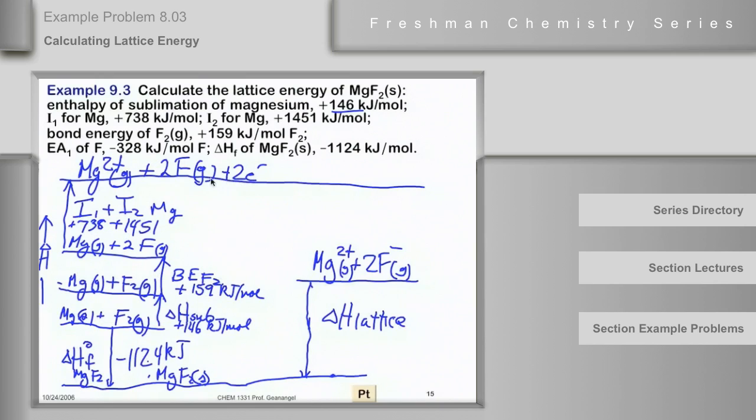Fluorine has an exothermic electron affinity, and there's going to be two of them. Students sometimes miss this, this is two times the electron affinity of fluorine atom, and that's given over here at negative 238. So this is two, three, I'm sorry, this is negative 328. So two times negative 328.